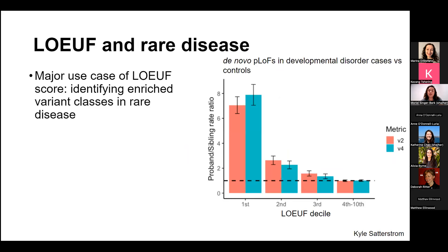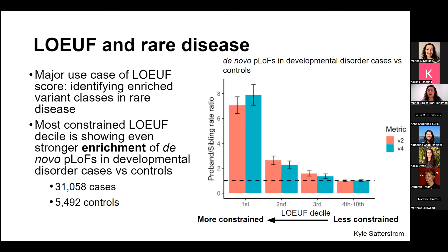One major use case of the LOEUF score is to identify enriched variant classes in rare disease. Looking at de novo predicted loss-of-function variants in developmental disorder cases versus controls, the most constrained LOEUF decile shows an even stronger enrichment of de novo predicted LoF variants in developmental disorder cases compared to controls. We see an even stronger signal in the V4 bar versus the V2 bar, showing that the expanded V4 dataset provides a better score.